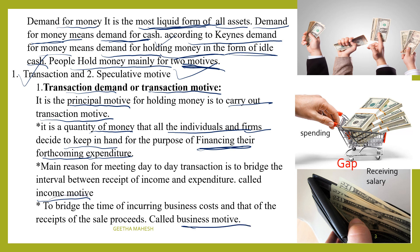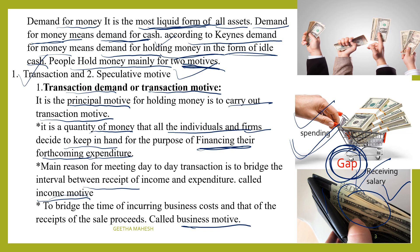Income motive: we have income motive and business motive. Under the income motive, we receive a salary but there is a gap — a bridge between when we receive income and when we spend it. We have to spend day to day, so we hold cash formally to cover that gap.